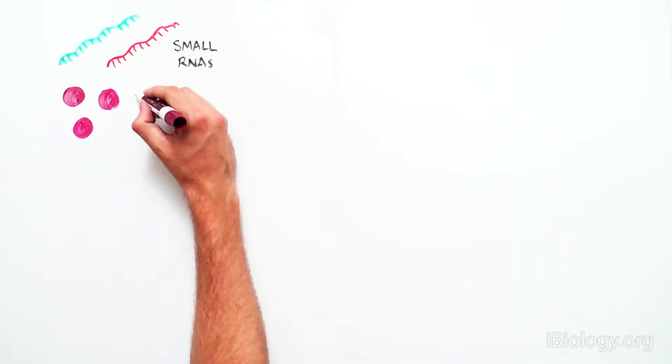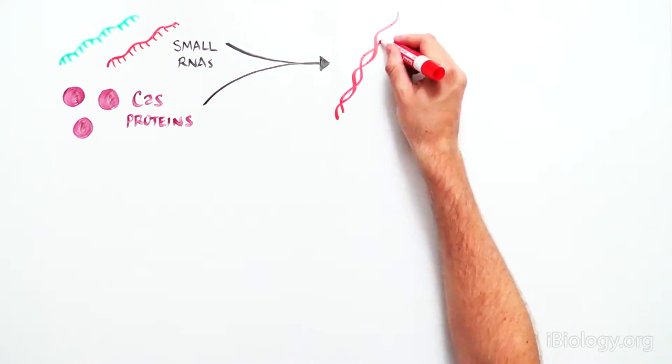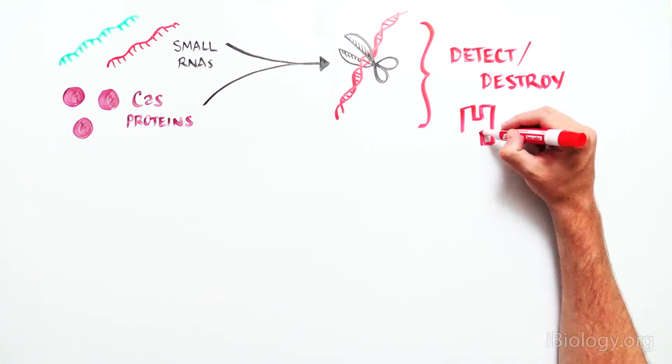But many questions still remained. How did the small RNAs and Cas work together to detect and destroy viral DNA?